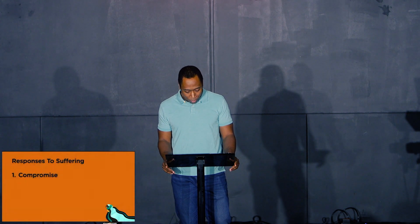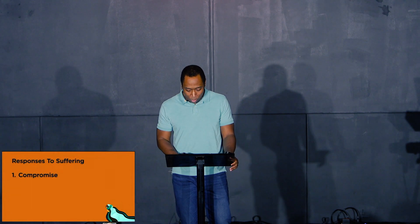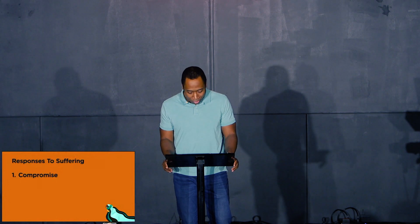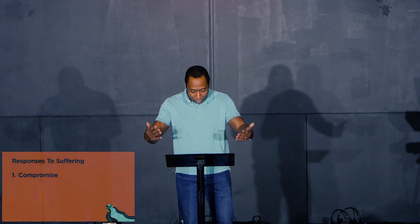There are three points I want to make today — three different ways that people in this passage respond to suffering. First, we'll look at Elimelech's response. His response to suffering was compromise. The suffering of the famine was meant to remind God's people what life is truly all about: following and trusting and worshiping God. It was to turn them back to God. Instead, Elimelech leads his family to move away from the place where God had given them freedom from the pressure to worship other false gods, and away from the people who were aware of the true and living God.